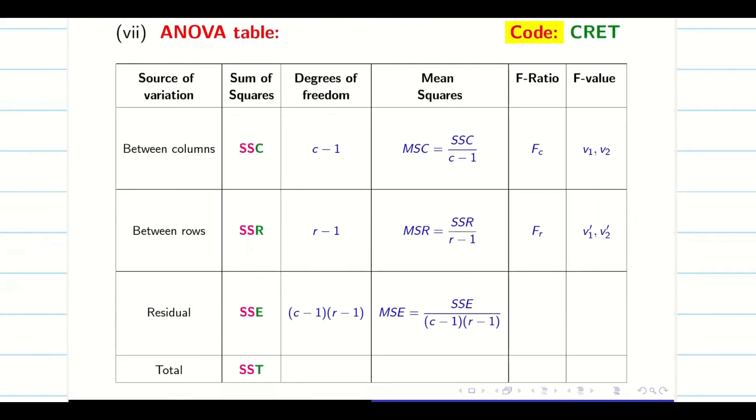As I said, for one-way ANOVA, the code is CET, College of Engineering and Technology. Now for two-way ANOVA, we have to remember the code CRET, C-R-E-T. Between columns SSC, between rows SSR, residual SSE that is the error, and total SST.